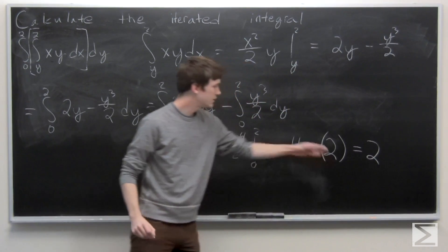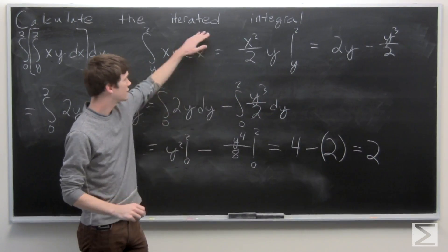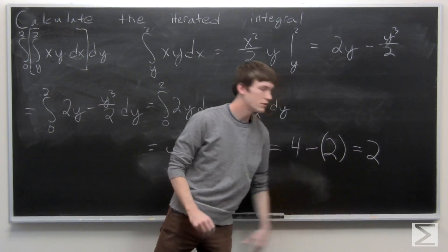So we get 4 minus 2 which is 2. So our iterated integral evaluates to 2.